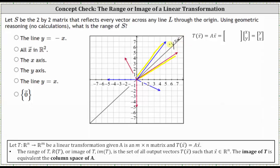If the input vector is the vector (-5, 0) along the negative X axis, after the reflection the output vector, or the image of the blue vector under the transformation, is the vector (0, -5), graphed here in red.